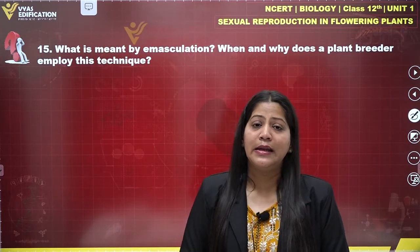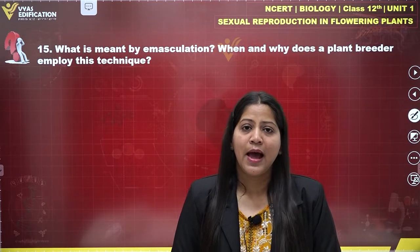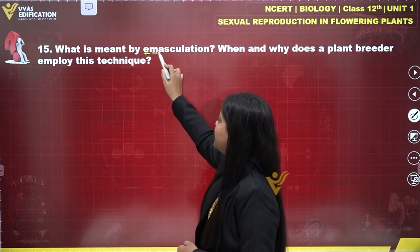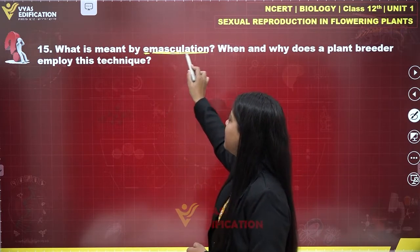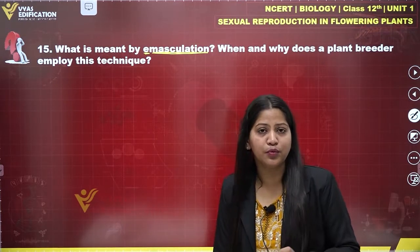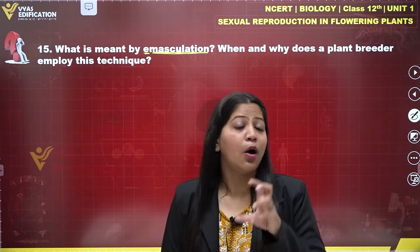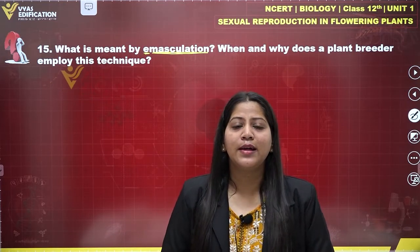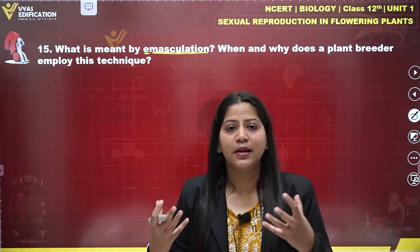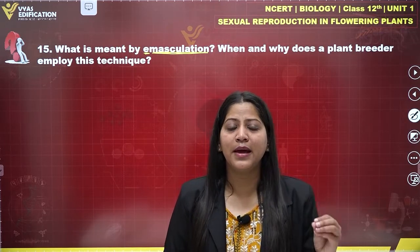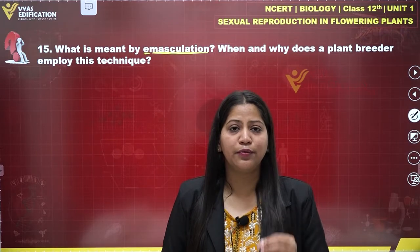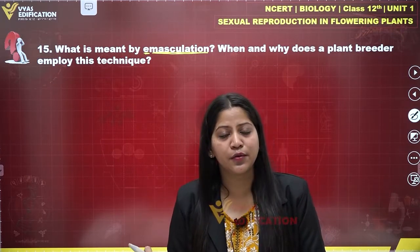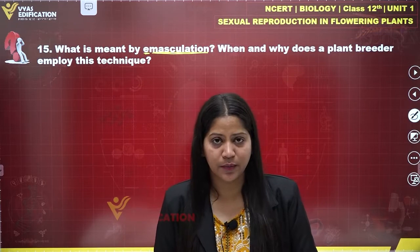Let's understand what emasculation means. As the name suggests, emasculation means the removal of a male reproductive organ. When we remove the male reproductive organ — specifically the anthers — from a flower, that process is known as emasculation. Simply put, emasculation means the removal of the male anthers from a flower.